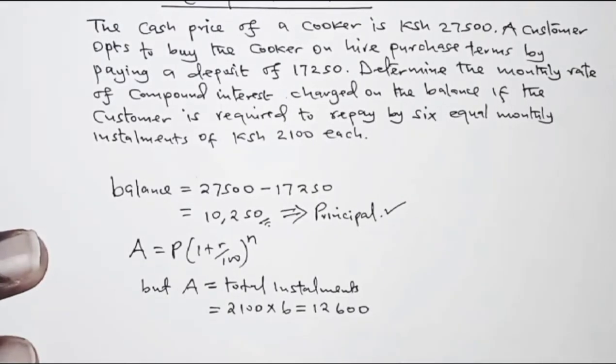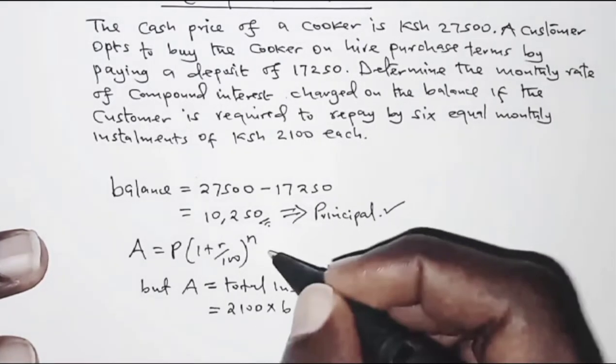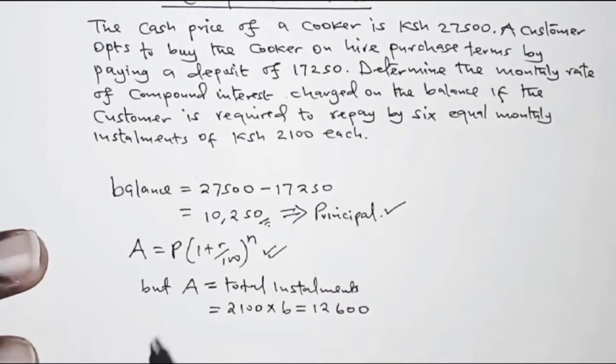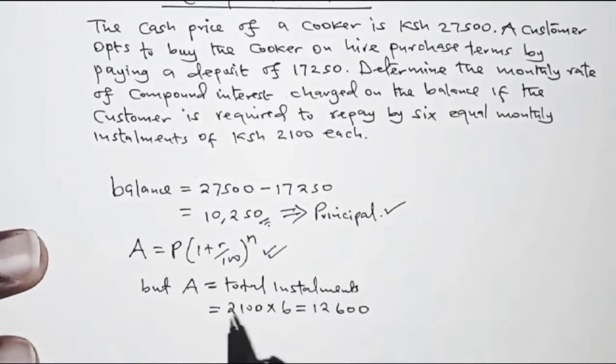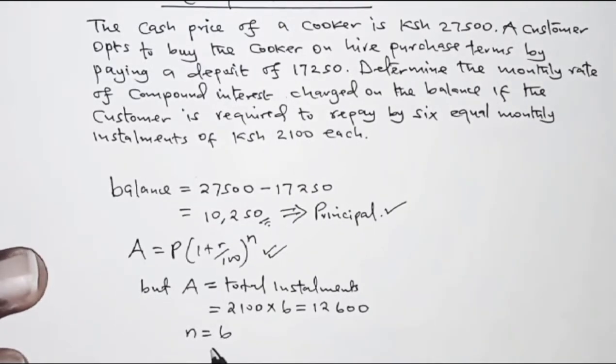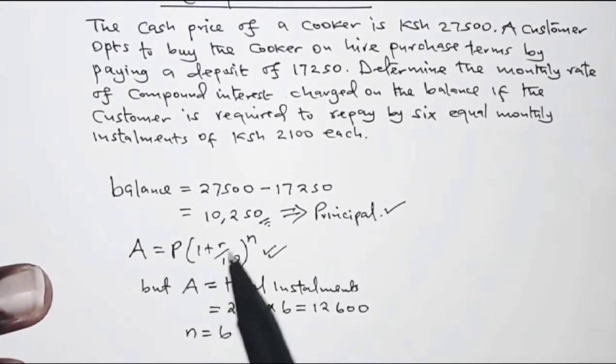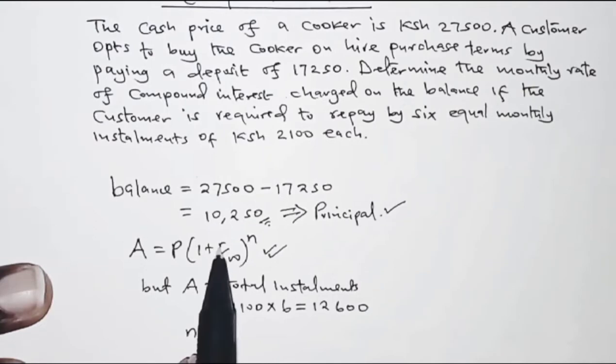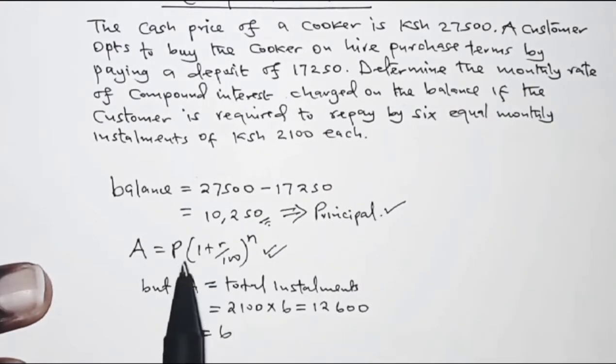Remember, we are to do our substitution in the compound interest formula. So we also need to know n. We know n is six. So I think we are set to do our substitution here so that we are able to get the value of r, which is the rate.